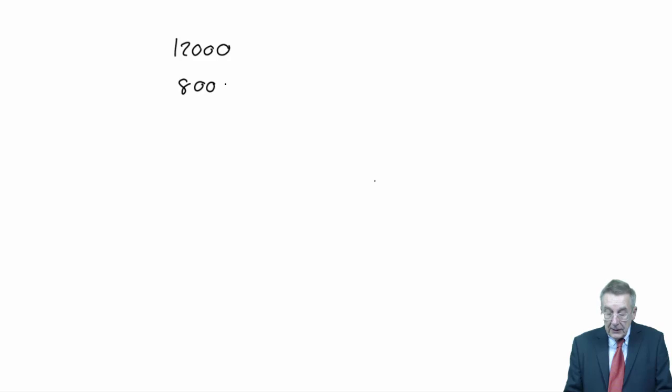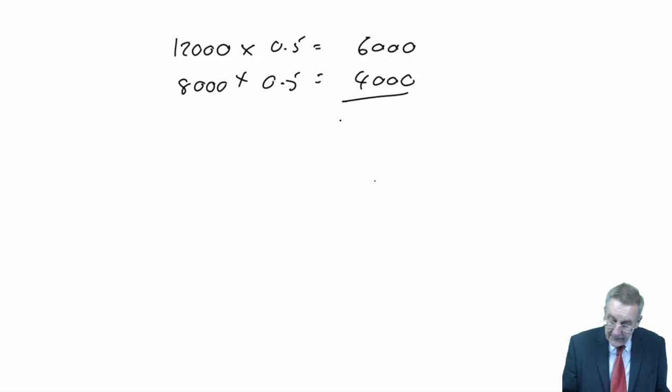The first is standard deviation. It's very easy here, but to explain the relevance, think back to expected values. Suppose I had a flow which was either 12,000 or 8,000, with probabilities 0.5. Whenever we're uncertain, there are two outcomes with probabilities, we base it on the expected value, the average, which is 10,000.